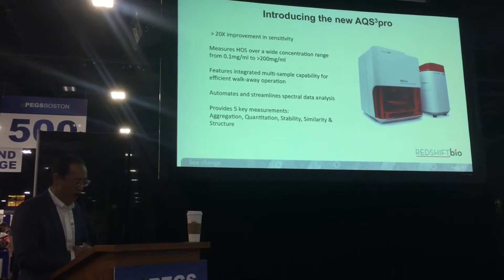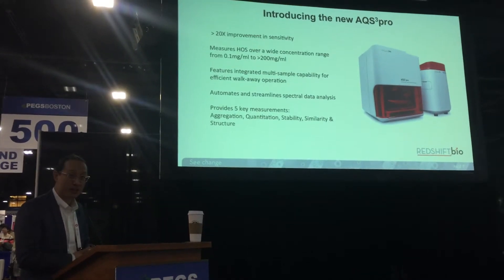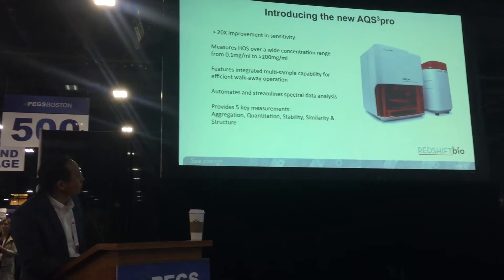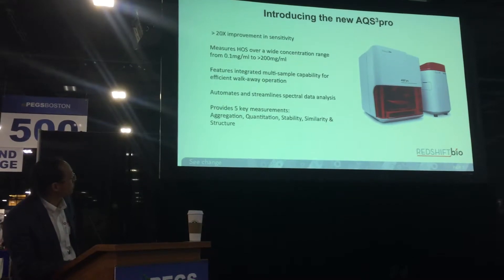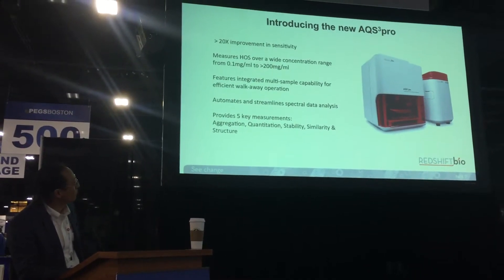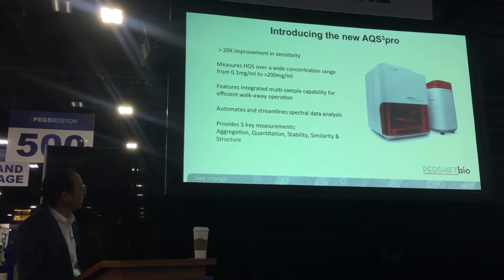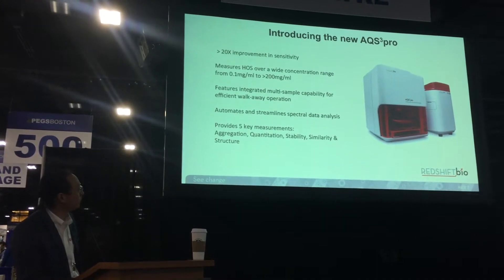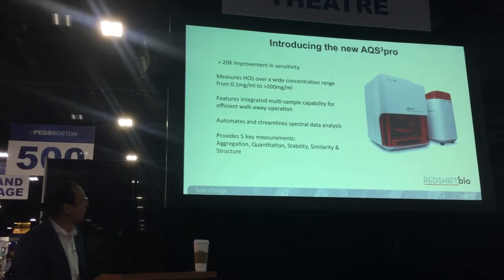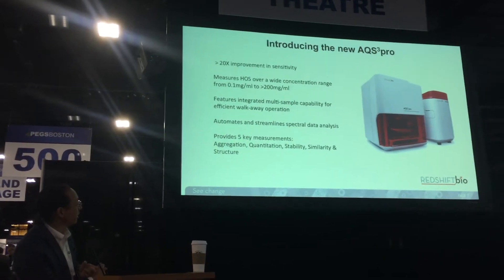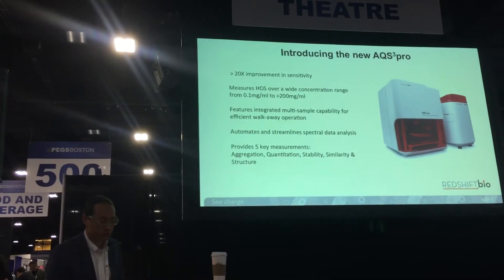We've been working very hard to develop a new instrument around this platform, and we are introducing it here at PEGS — it's called the AQS3 Pro. It has a 20 times improvement in sensitivity over traditional methods and a wide concentration range of 0.1 to over 200 mg/mL. It features integrated multi-sample capability for walk-away operation, automates and streamlines data analysis, and provides five key measurements: onset of aggregation, quantitation, structural stability, similarity, and secondary structure.